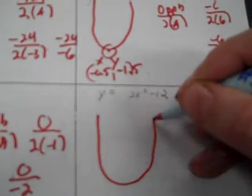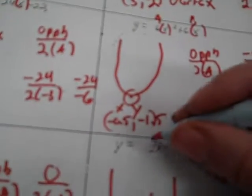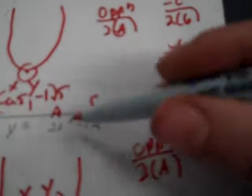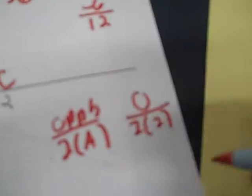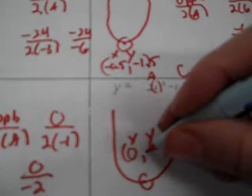The last problem is positive, so it's right-side up, and I need to find the vertex point. Again, there's an a but no b — no x to the first power. So b is 0, and 2 times a — where a is 2 — is 4. So 0 divided by 4 is 0. Then I replace x with 0: 2 times 0 squared minus 12 equals negative 12. So my vertex is (0, negative 12).